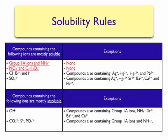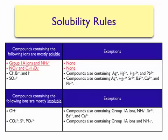The second category contains ions that will cause an ionic compound to be mostly insoluble. The first rule under this category is that most hydroxides are insoluble in water. Exceptions include compounds that also contain Group 1A ions, ammonium ions, strontium ions, barium ions, or calcium ions. For example, calcium hydroxide is soluble in water; however, copper(II) hydroxide is predicted to be insoluble in water.